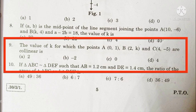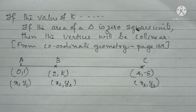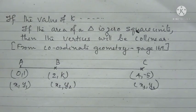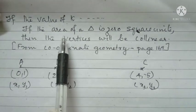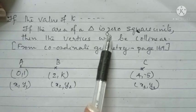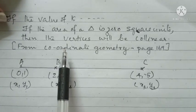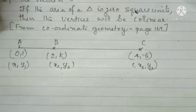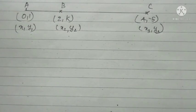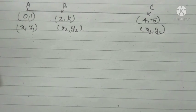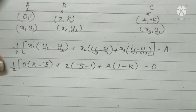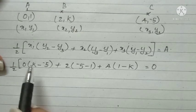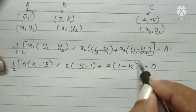Next question, the value of k for which the points A(0, 1), B(2, k), and C(4, -5) are collinear. In the question, it is given that the points are collinear. But we know that if the area of a triangle is 0 square unit, then the vertices will be collinear. Therefore, we are applying the formula of finding the area of a triangle in this one. So, substituting each value, we will get like this one.